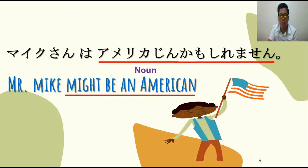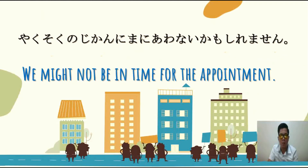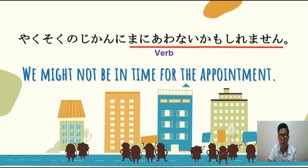Next example: Yakusoku no jikan ni maniawanai kamo shirimasen. Means, we might not be in time for the appointment. Dito, verb naman yung ginamit natin, which is naka-negative — naka-nai-form siya. So sa verb, kailangan plain form din; nai-form is plain form. Then plus Kamo Shirimasen. Ibig sabihin, might not be in time.